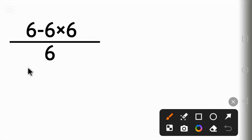The numerator, we put it down here. Six minus six times six. This is a division sign. So before that, let's group it with parentheses. Now divide by this six.